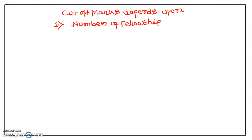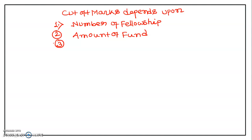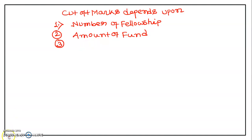The cutoff marks depend on several factors. One important factor is the number of fellowships provided by CSIR and UGC jointly, and this number also depends on the amount of funds CSIR or UGC have available. Another important factor is the difficulty level of the question paper.